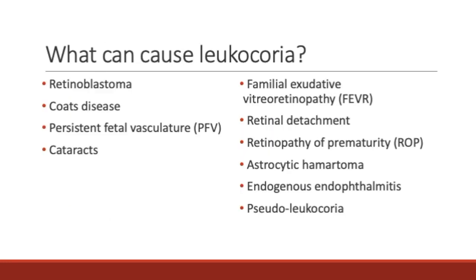So what are the causes of leukocoria? The most important diagnosis we want to differentiate is retinoblastoma, a type of cancer. The next few are Coats disease, persistent fetal vasculature, and cataracts. These four are the most common causes of the abnormal white reflex. Other less common causes include familial exudative vitreoretinopathy, retinal detachment, retinopathy of prematurity, astrocytic hamartoma, endogenous endophthalmitis, and pseudoleukocoria. For the rest of this presentation, I will talk about important clinical features of each of these.